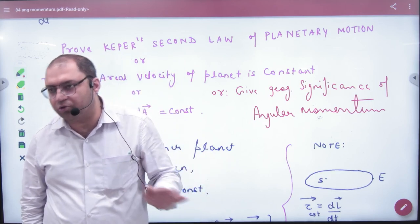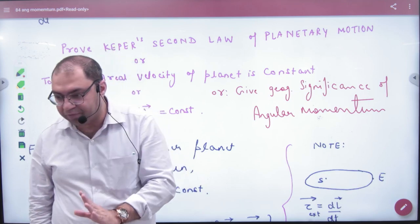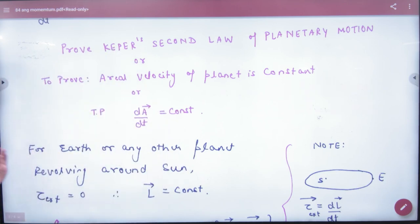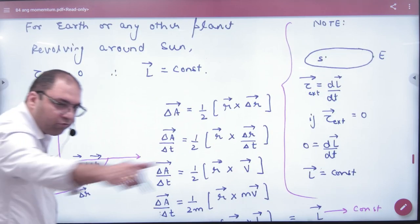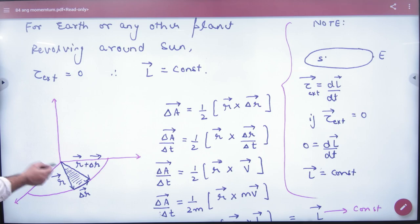So if we have a question, then we have to do the second law. What should we do? It is an areal velocity constant. So let's say a planet is floating around the sun. This is the sun in the center. Let's write this in the booklet. This is the sun and this is the planet. This is floating around the planet.